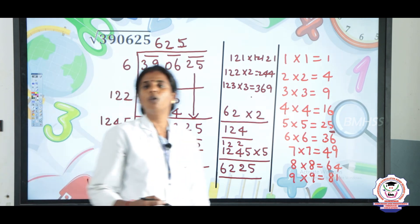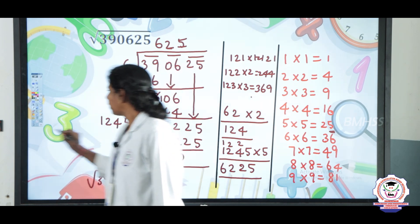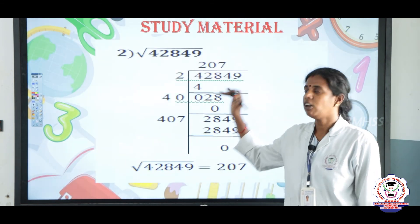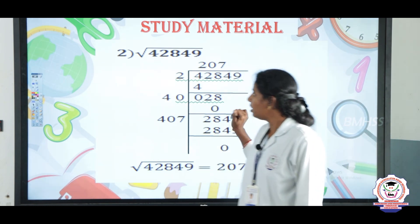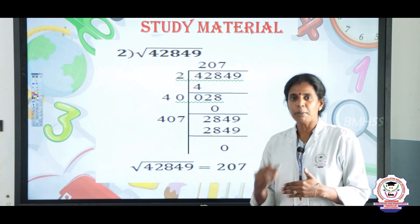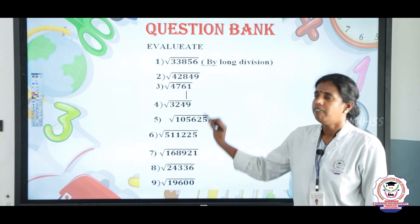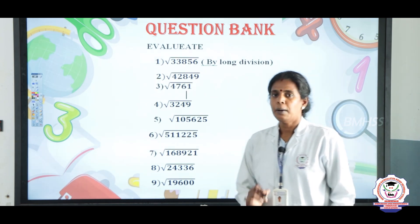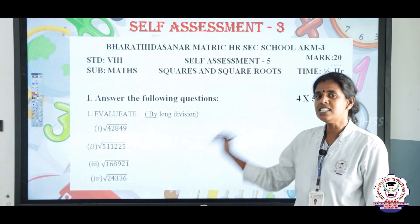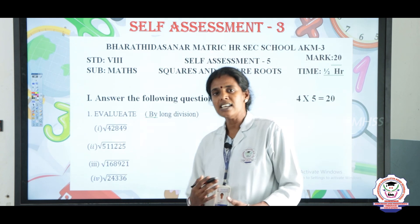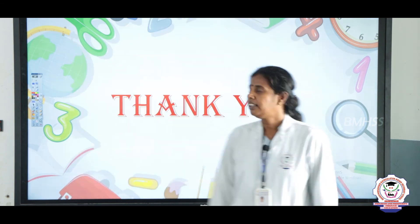So that is how to find the square root using the long division method. There is a study material available for these questions with answers. Using this study material, you can solve the remaining problems given in the exercise. In the question bank, questions are given for your practice. After finishing, make use of the self-assessment question paper and evaluate how much you have learnt about square root using the long division method. Thank you.